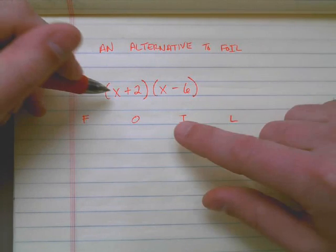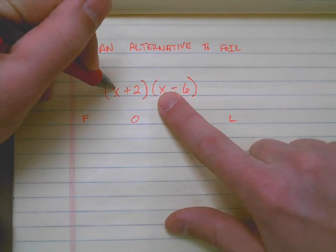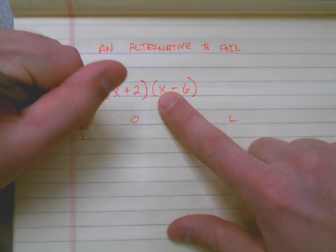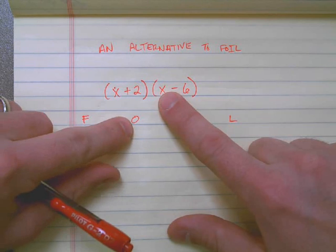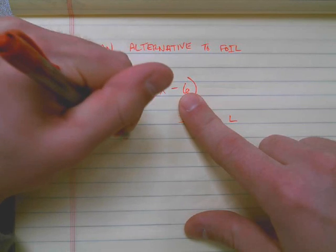So for instance, if I wanted to FOIL this out, I would take the first terms, x and x, and multiply them together. That would give me x². I would then take the outer terms, which is x and -6. I would multiply those two, that gives me -6x.